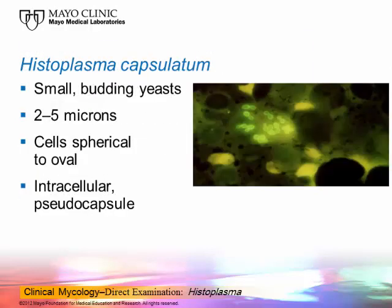The next slide shows an example of Histoplasma capsulatum within a mononuclear cell. If you look on the right-hand side in the photograph, you'll see very small budding yeast cells sitting inside of a mononuclear cell. They're about 2 to 5 microns in size, usually spherical to oval. A lot of times they're intracellular within those mononuclear cells, so they're described as intracellular parasites, but they may not always be present that way.